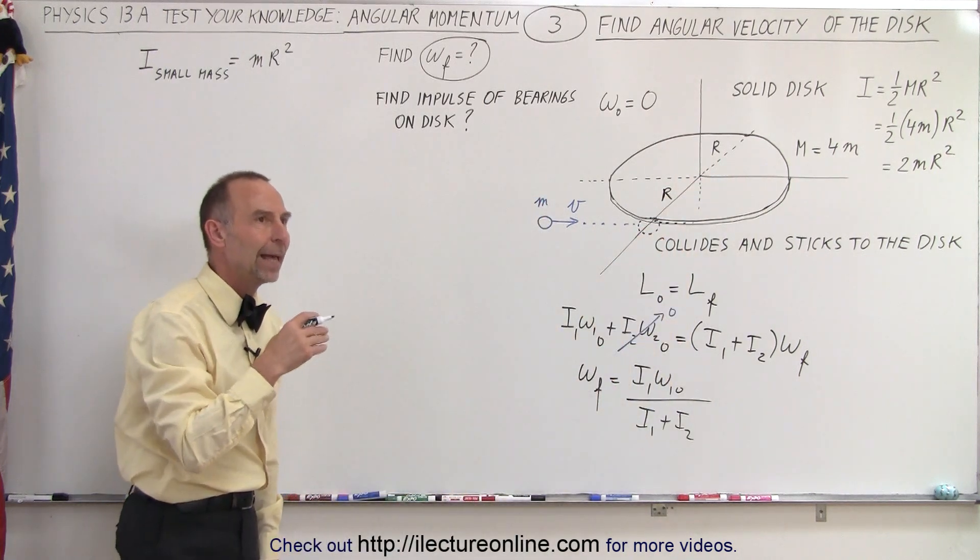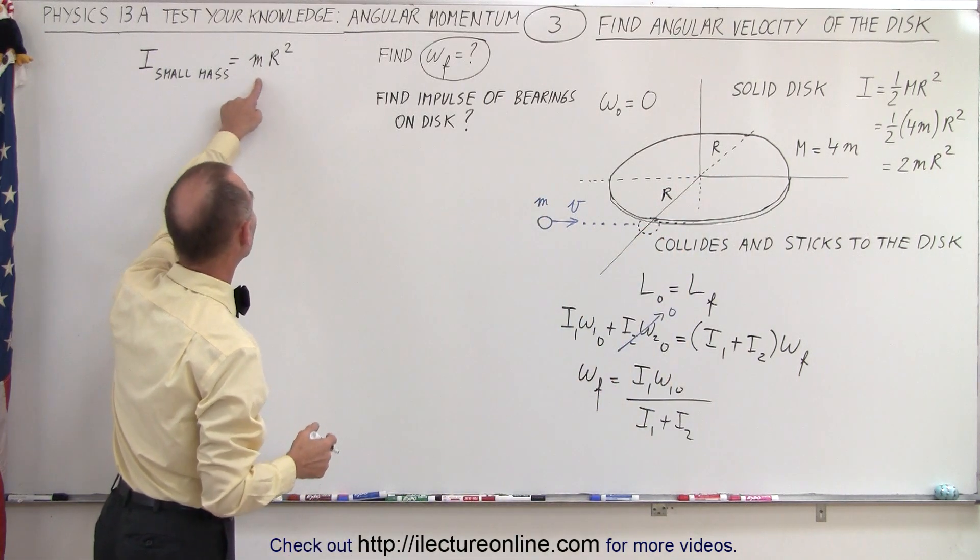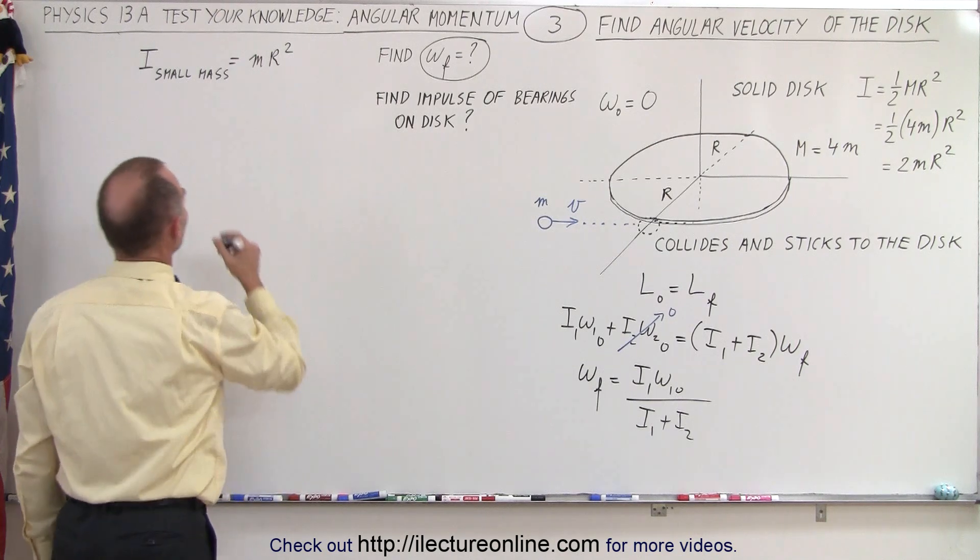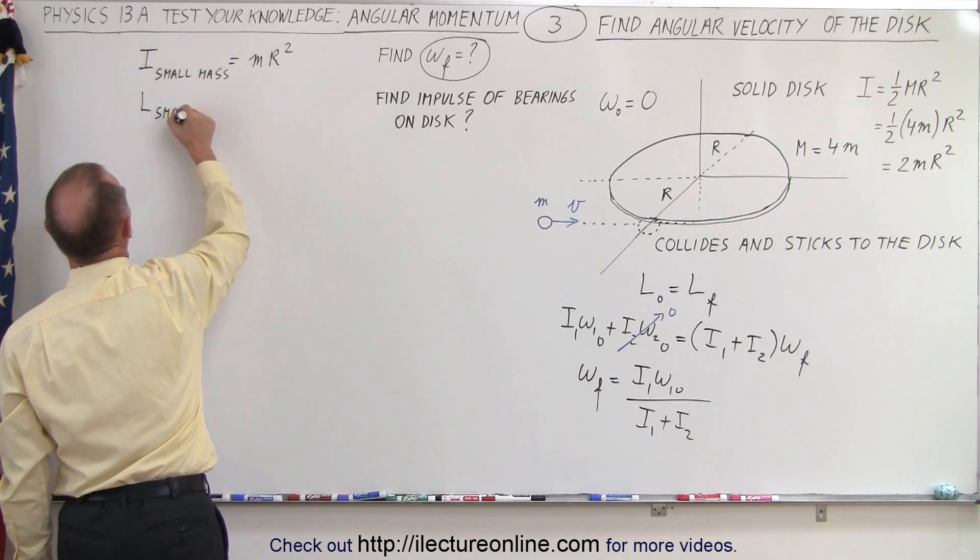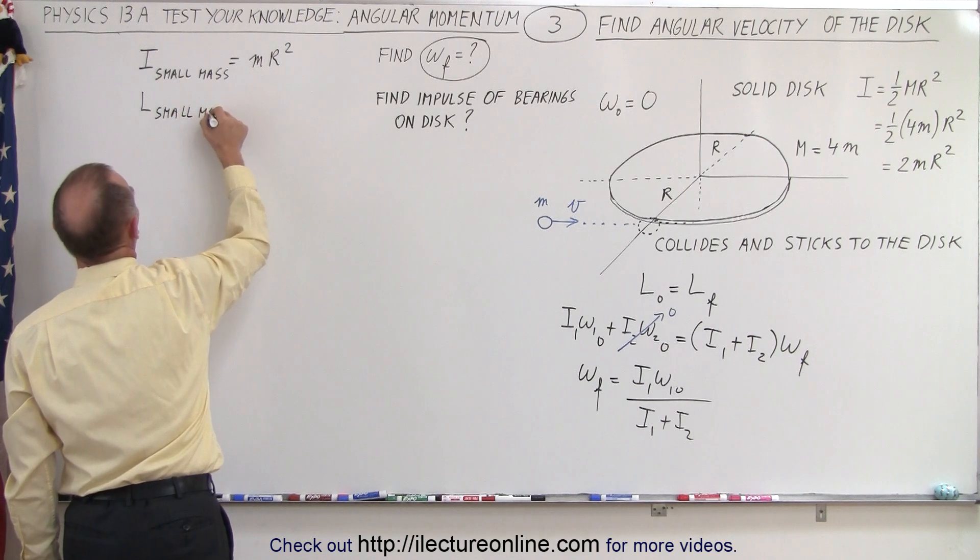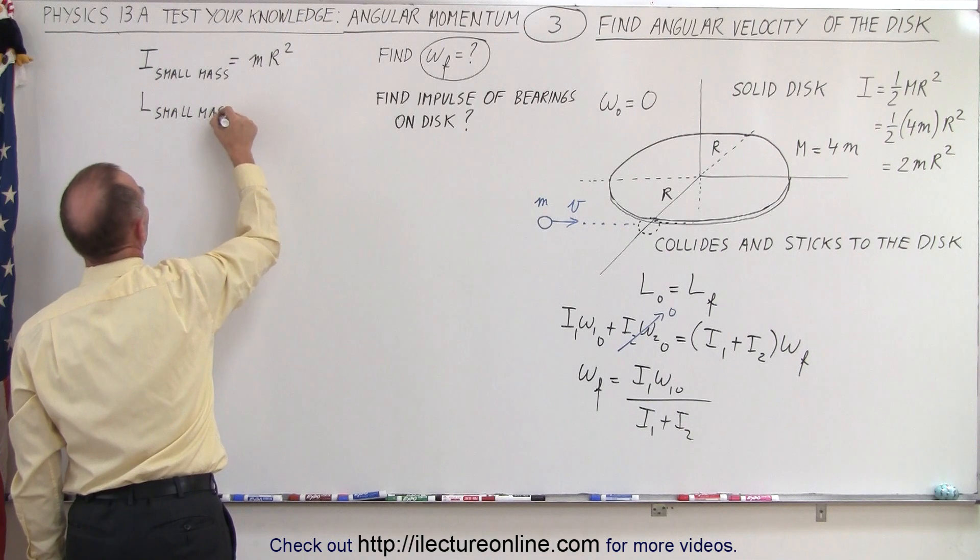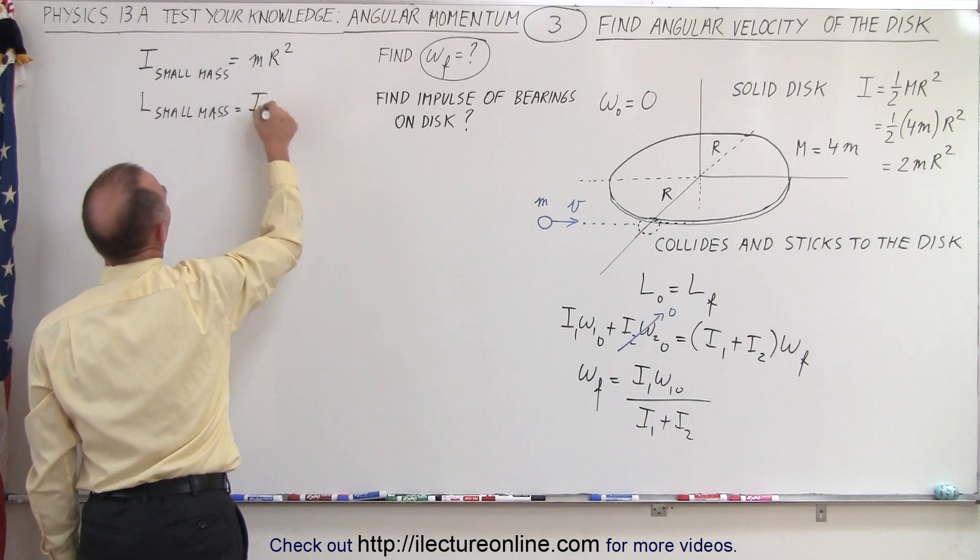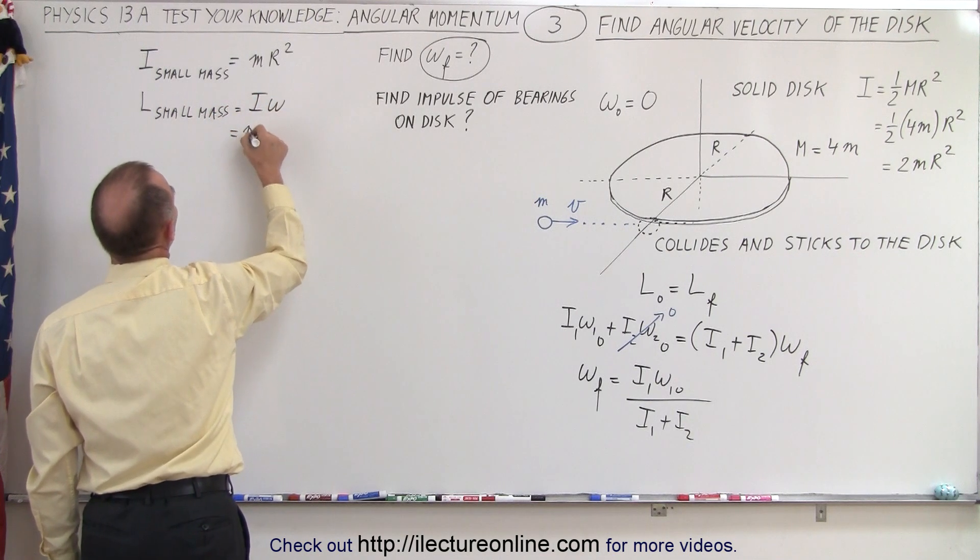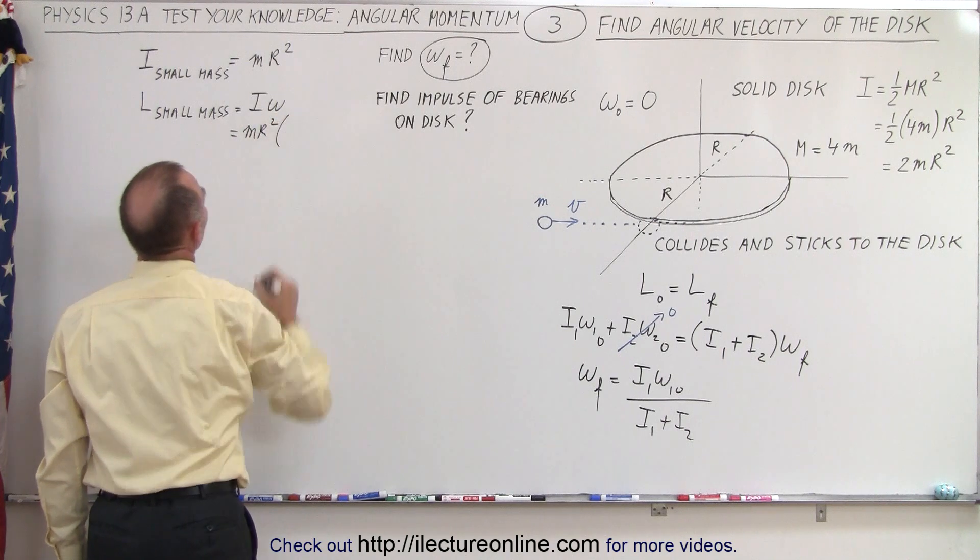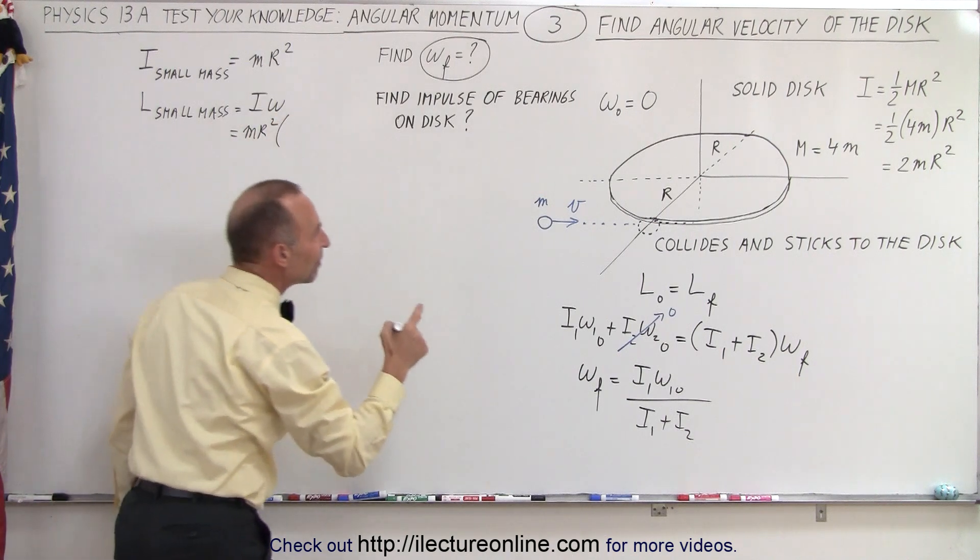So that would be mr² for the moment of inertia. And then if you want to find L for the small mass, that would be equal to I times ω. So in this case it would be mr² times ω, and ω would be v over r.